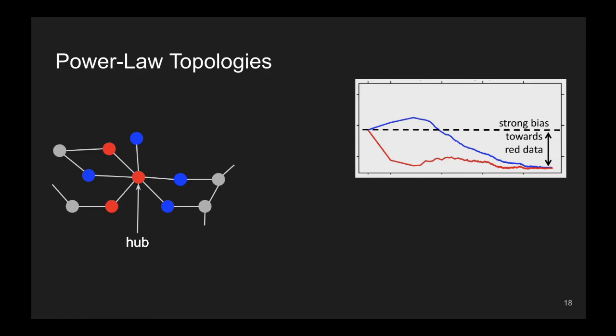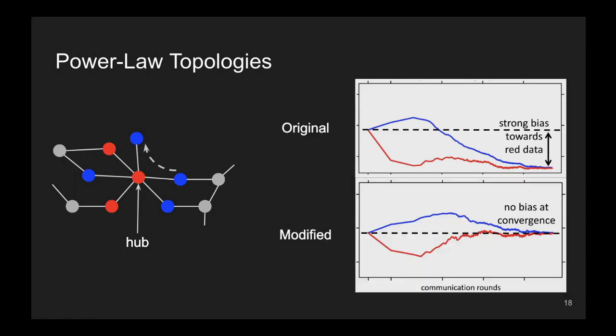As a solution, we propose to have the hubs choose, with a probability proportional to their degree, whether to train the received model as the original protocol states, or whether to just forward it to other nodes. Our results show that this method can remove the bias added by hubs.